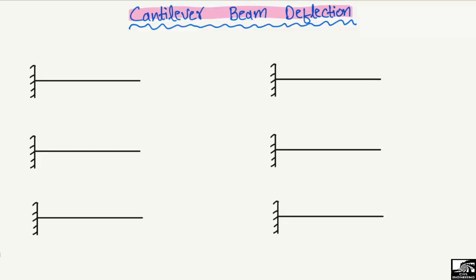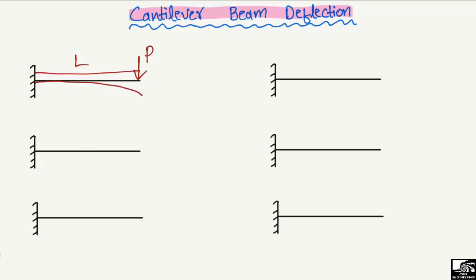Starting with the first case: a cantilever beam is a type of beam where one end is fixed and the other end is free — it has no support. Now consider a concentrated or point load P acting at the free end of the beam, where L is the total length. The maximum deflection occurs at the free end.